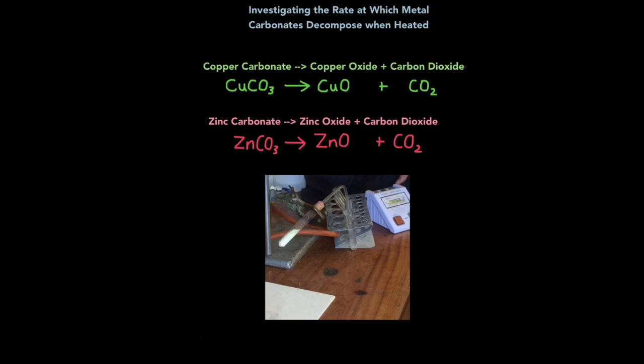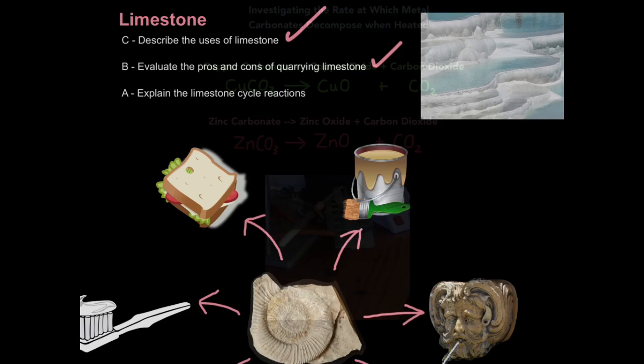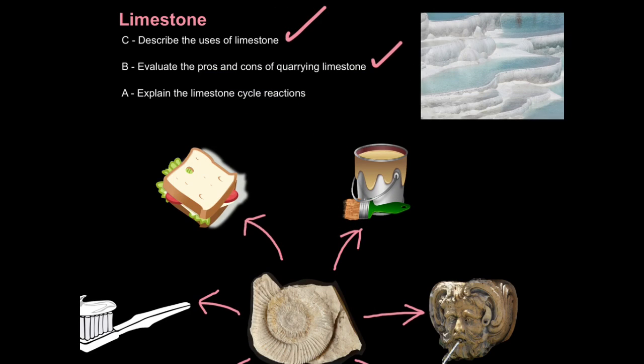One small point to add: it could be with a specific metal carbonate you heat it and heat it and you're getting nothing over here. That's because some carbonates require very high temperatures before they start decomposing, much higher than a Bunsen burner can provide. So that is how I explain the limestone cycle reactions.